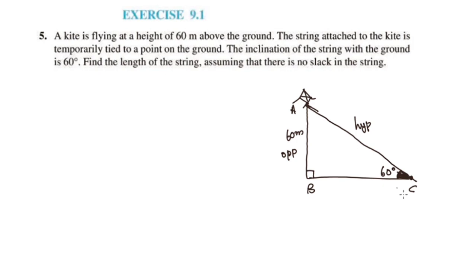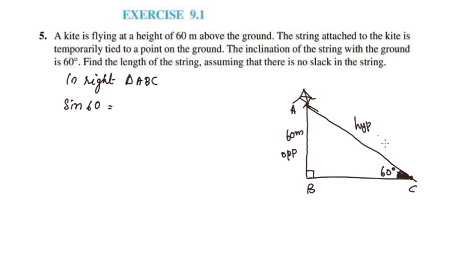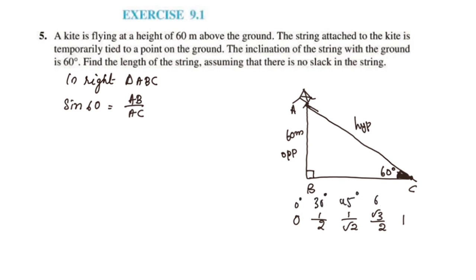We will use sin 60. Opposite by hypotenuse is sin. In right triangle ABC, sin 60 is equal to opposite by hypotenuse, that is AB by AC. The trigonometric angle values are: sin 0°, sin 30°, sin 45°, sin 60°, sin 90°. Sin 60 is root 3 by 2.